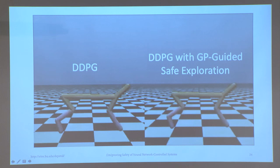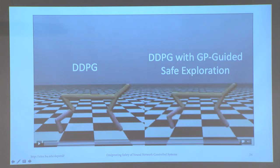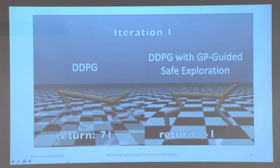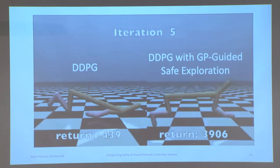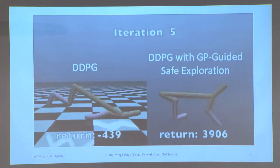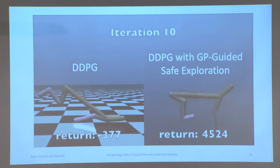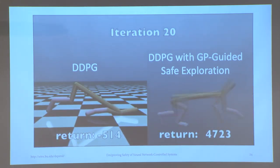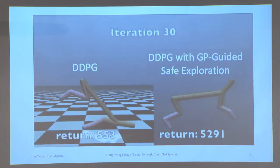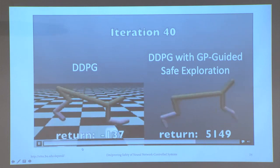In the demonstration: at iteration one, DDPG (deterministic policy gradient) is shown. Using Gaussian process estimation of the safety part, our method very quickly achieves a high return, whereas DDPG still fluctuates in reward and gets into strange scenarios — moving a little bit, but with the cheetah's head on the ground.